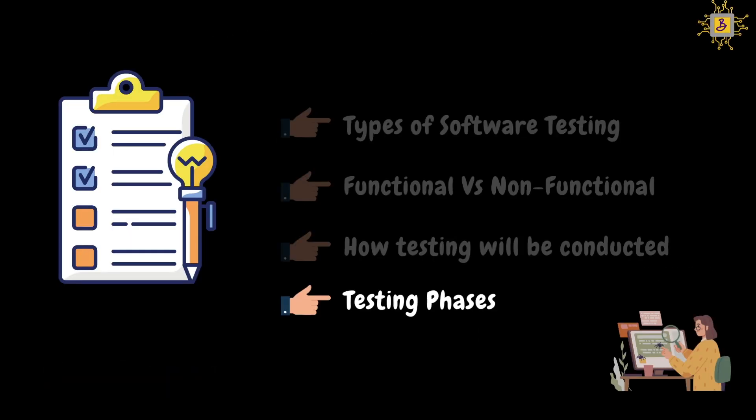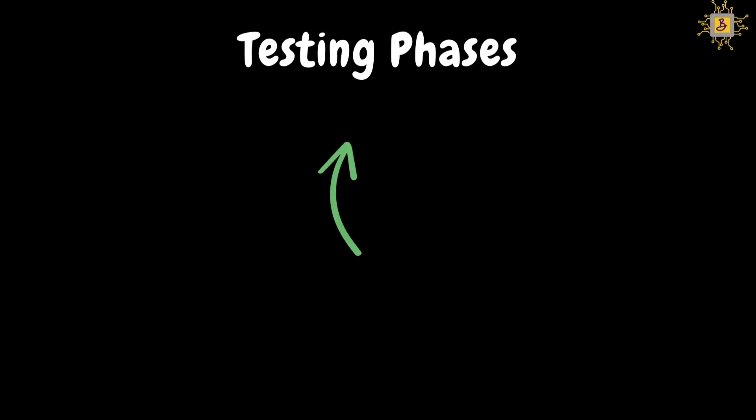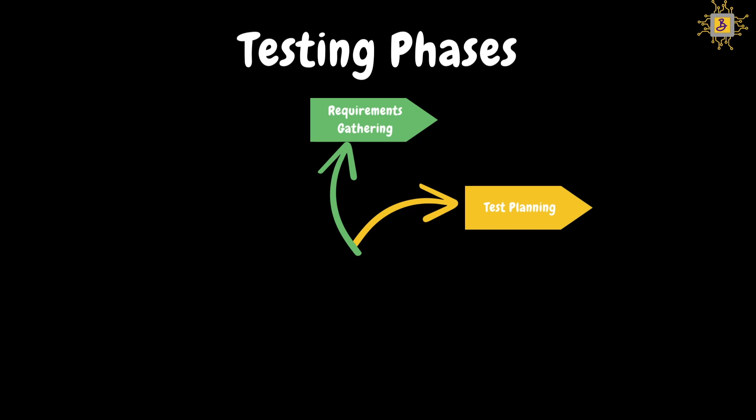Now let's discuss different testing phases — these are the common phases that all testing teams will follow. Depending on the process in the company, there may be some additional phases. Our first phase is Requirement Gathering, where all testing requirements will be gathered and analyzed, and the scope of testing will be determined — the functionalities that will be tested and those that will be skipped. The test manager or lead will gather all the necessary requirements. The second phase is Test Planning, where all gathered requirements will be documented and reviewed with the team to finalize the testing scope. Timelines for testing and supportive resources information will also be finalized. Usually the test manager or lead will conduct this phase.